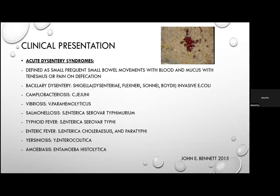Acute dysenteric syndromes are defined as small, frequent bowel movements with blood and mucus, with tenesmus or pain on defecation, with or without fever, usually due to colonic mucosal invasion. Bacillary dysentery is caused by Shigella and invasive E. coli. Shigella has four species: Shigella dysenteriae causes severe epidemic disease; Shigella flexneri and sonnei are most common globally; Shigella boydii is found in India. These patients have bloody diarrhoea with high fevers, incubation of 6 hours to 9 days; bacteraemia is actually rare.